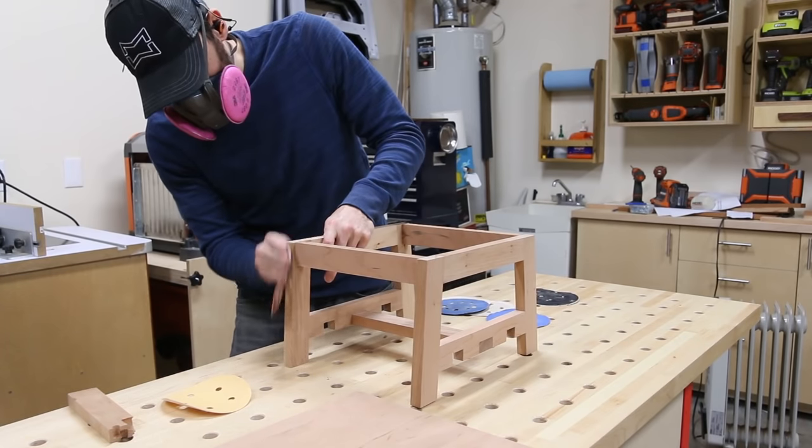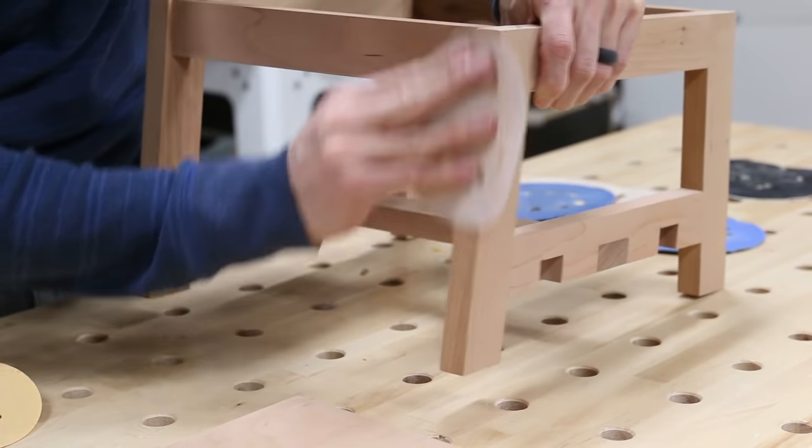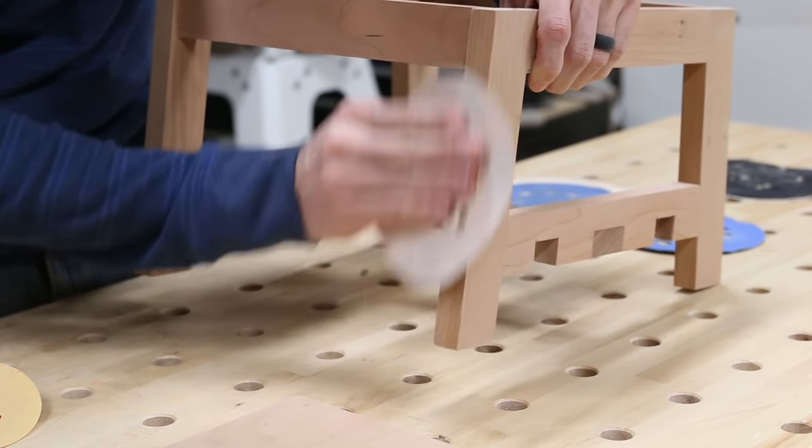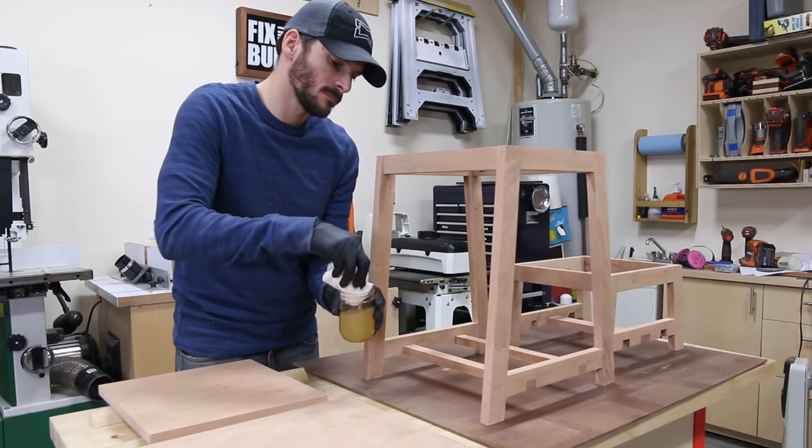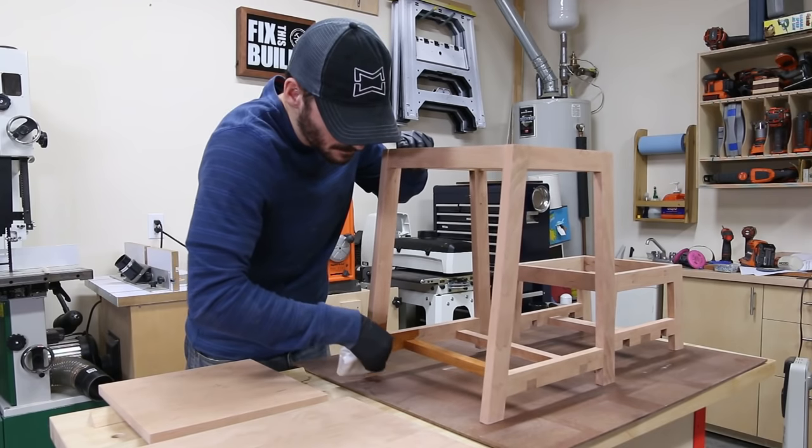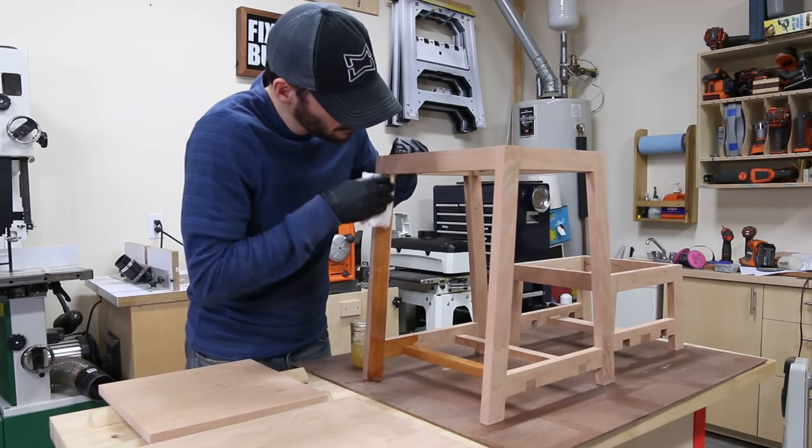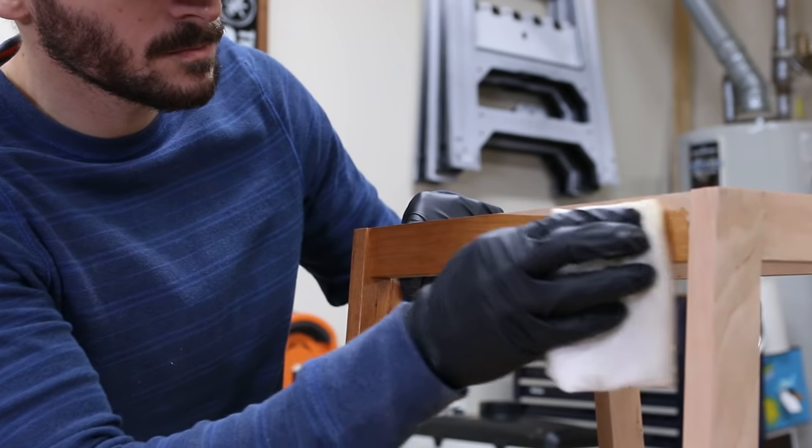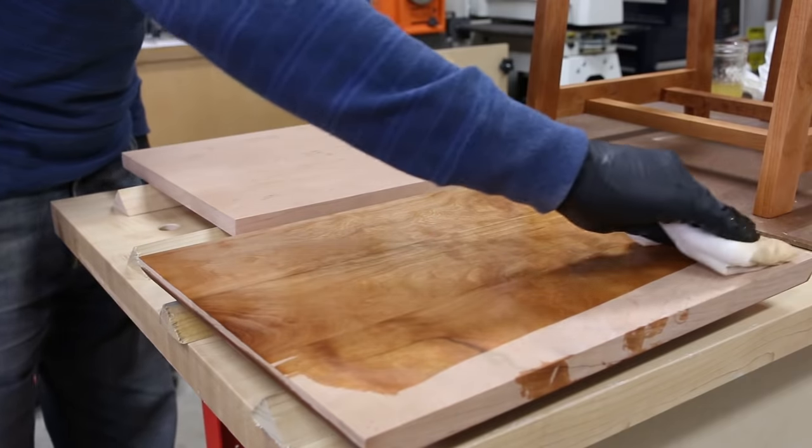I prepped for finish by sanding everything up through 220 grit. Before assembly I had already sanded everything up to 150 so this went by really fast. For the finish I applied four or five coats of oil-based wiping varnish. I just love how the oil finish deepens the tone of the cherry and really brings the figure out.